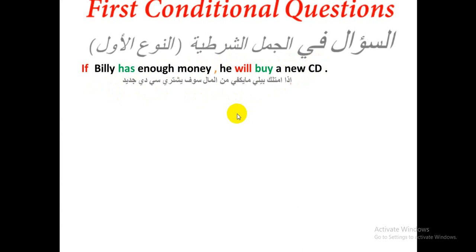This is a yes/no question. The answer will be 'Yes, he will' or 'No, he won't.' We also have WH-questions — for example: 'What will Billy buy if he has enough money?' The answer: 'He will buy a new CD.' But today we'll talk only about yes/no questions.